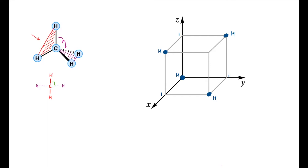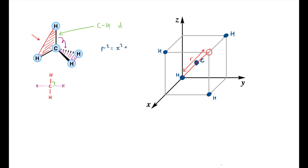Somewhere in the middle of the cube should be the carbon atom, at a position exactly halfway along each of the coordinate axes. I'll define the C–H bond length as a variable d. Looking at the top corner indicated in red on my unit cube, if we draw a line from the origin to that position, the carbon will be at the exact midpoint of that line. I define this line as having length r, and using Pythagoras in 3D: r² = x² + y² + z² = 1² + 1² + 1², so r = √3.